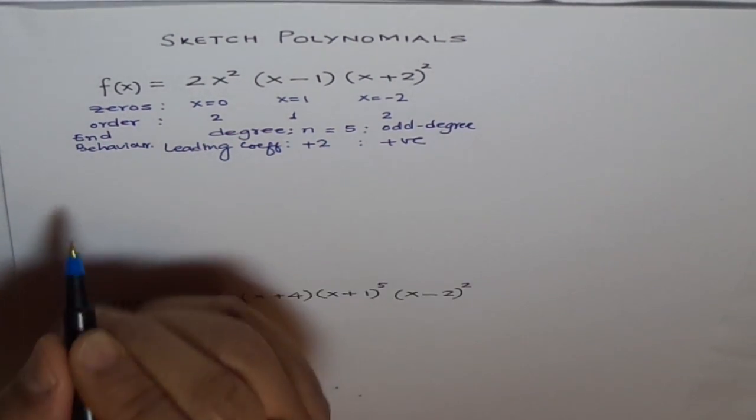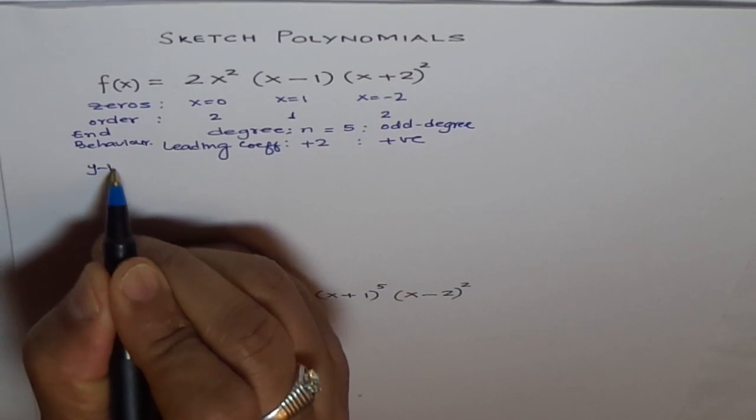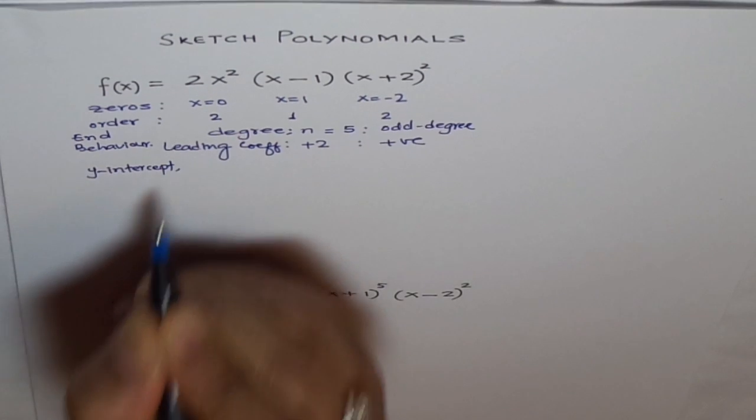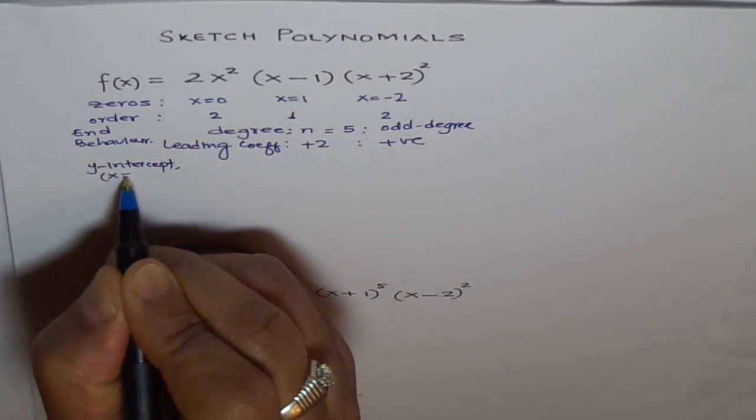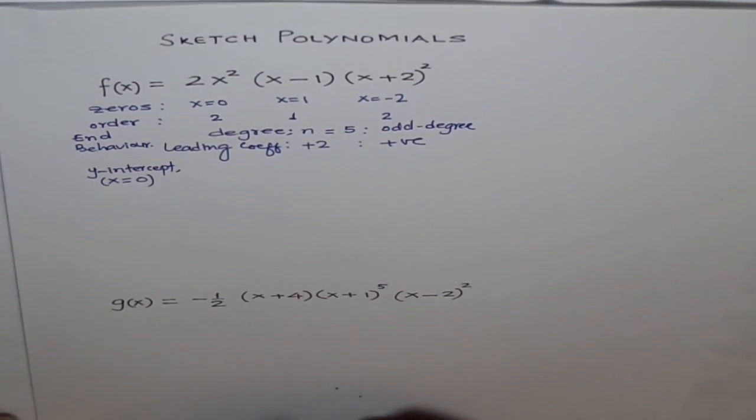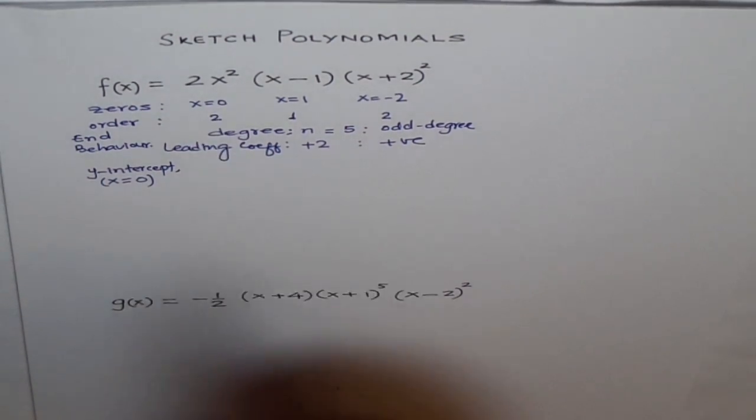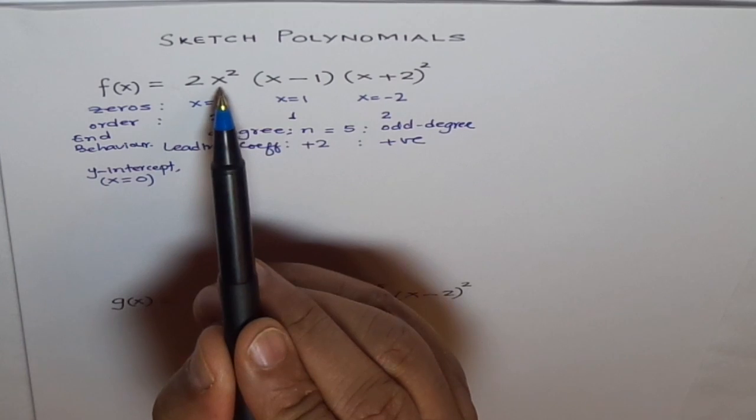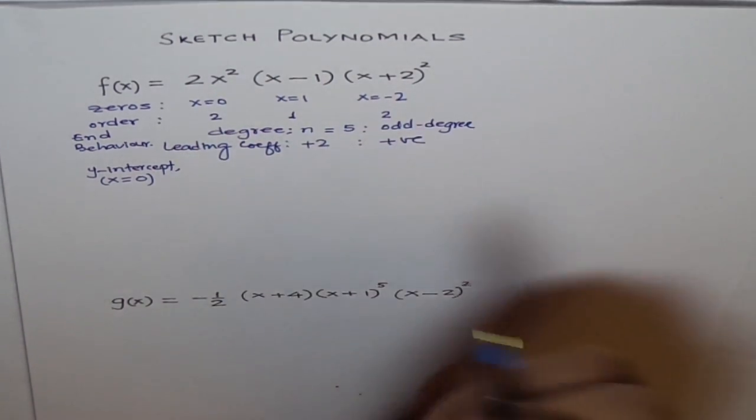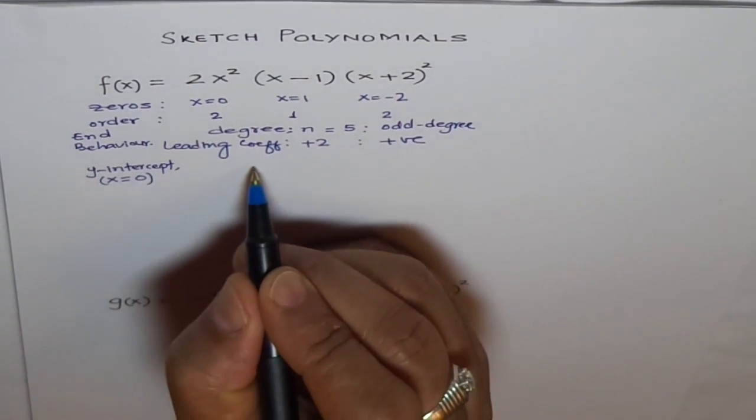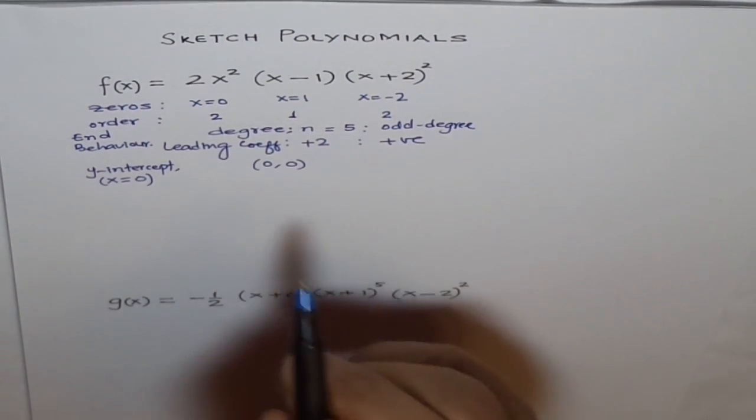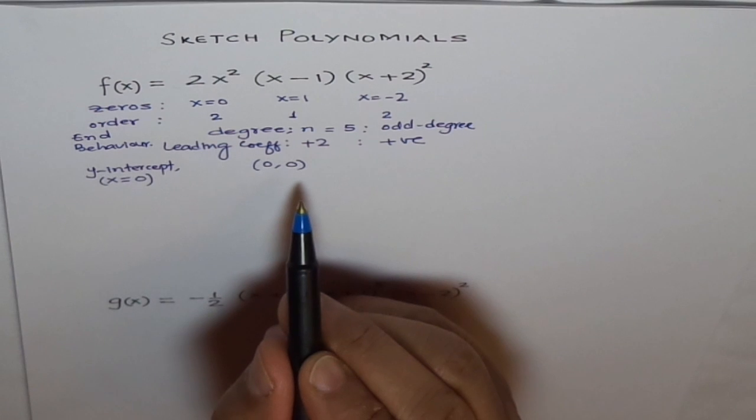Another important point is to find y-intercept. How will you find y-intercept? Y-intercept is a point where x equals zero. In the factored form, just put x equals zero. In this case, if you put x equals zero, this term will be zero. Zero times anything will be zero. Therefore, y-intercept is the origin.